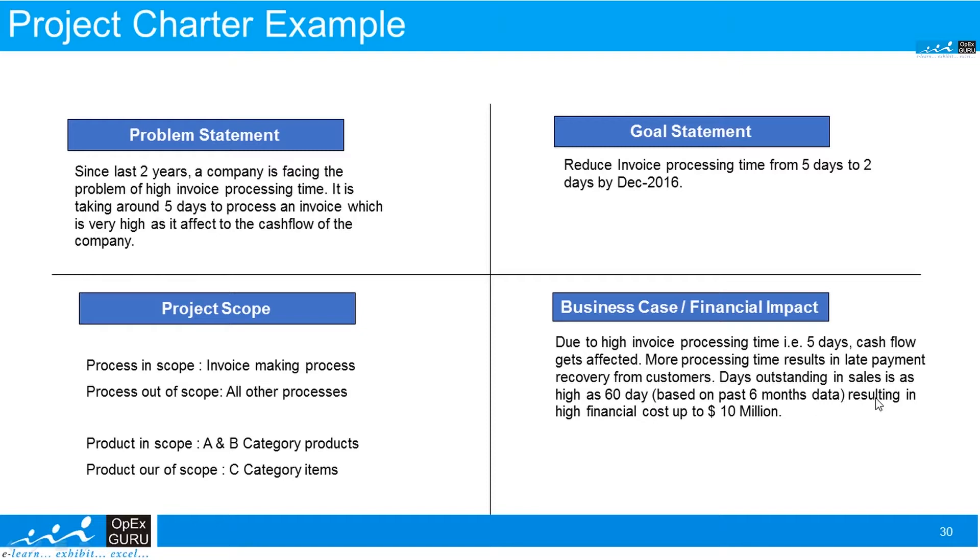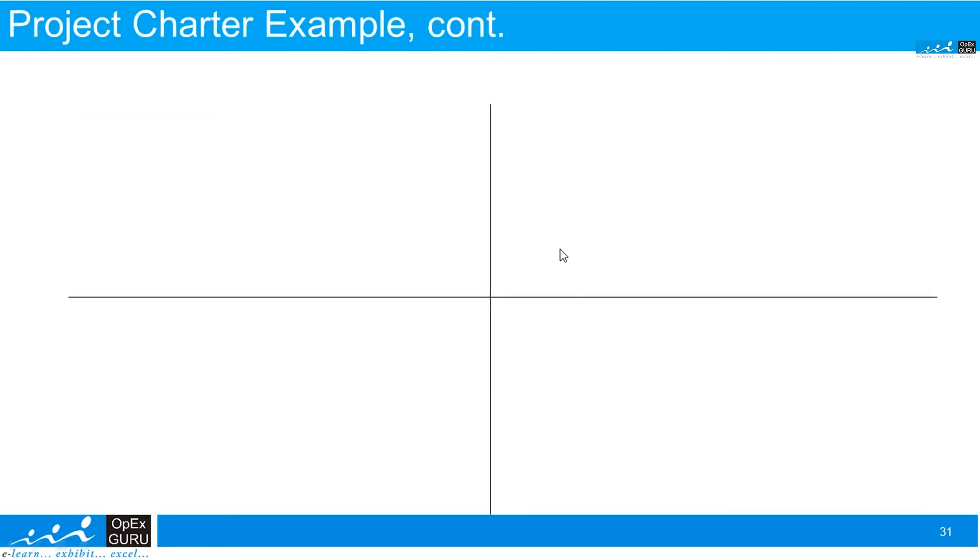As a result of this, the company has to borrow finances from other sources which is costing the company up to 10 million dollars. What is the benefit if we do this project? If we reduce this from five days to two days, the company has a potential to save around 1 million dollars. So this is the financial benefit.